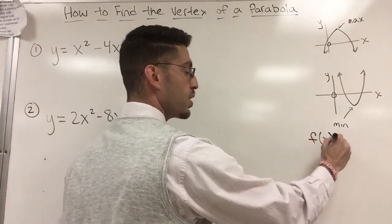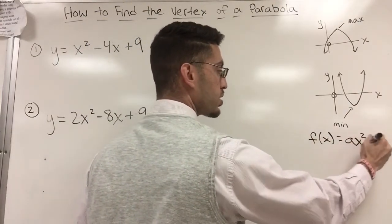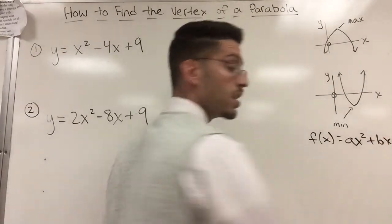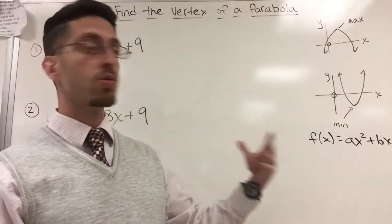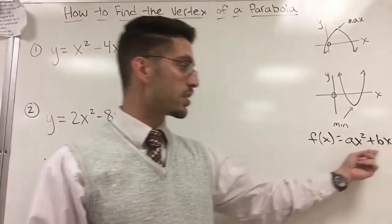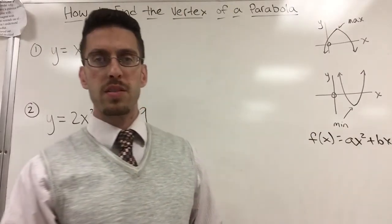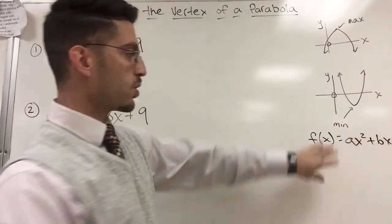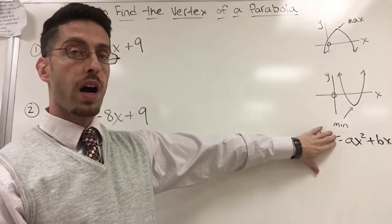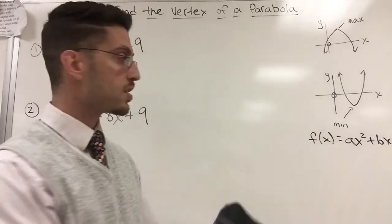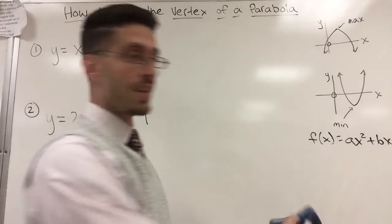f of x equals ax squared plus bx plus c. You already did a whole unit on factoring quadratics where it was just ax squared plus bx plus c. Some people might even say instead of using f of x they use the letter y, which to me makes more sense, but function notation uses f of x.